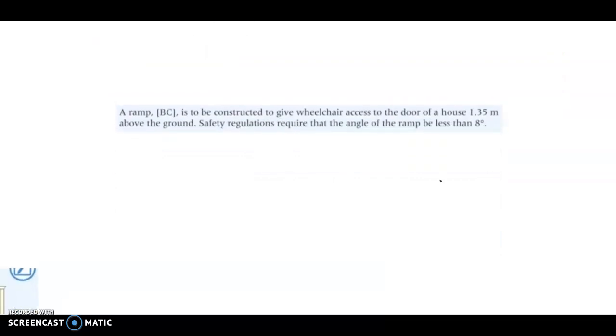So let's just jump right into a couple examples here. It says a ramp, BC, is to be constructed to give wheelchair access to a door of a house 1.35 meters above the ground. So let's just think about it. So we have this house, and on this house is a door, and there's a ramp that needs to come down. And we call that BC. So this will be B, the house will be C. And this is 1.35 meters. We'll just call this A.